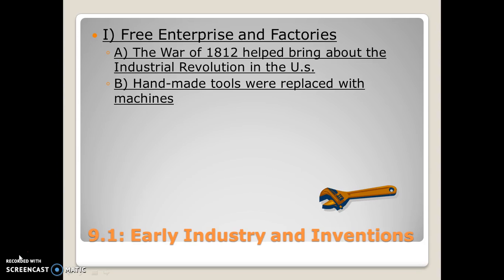The War of 1812 — because we were blockaded by Britain — forced the United States to begin the Industrial Revolution, or more or less begin making things not by hand but by factories. Because we couldn't trade, we ended up having to make most of our manufactured goods — like weapons, clothing, and shoes — ourselves instead of importing from another country. This helped create our industrial base in the northern United States, also known as New England.